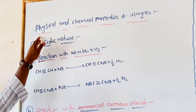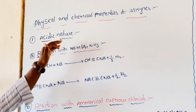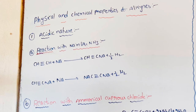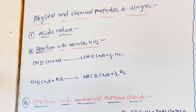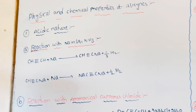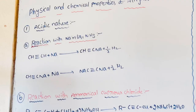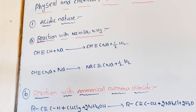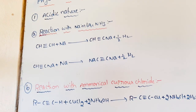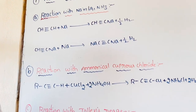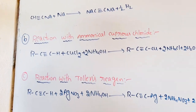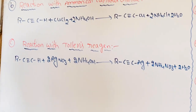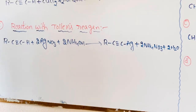Next, chemical properties. Chemical properties are classified into four types: one is acidic nature, second is addition reactions, third is oxidation reactions, and fourth is polymerization reactions.